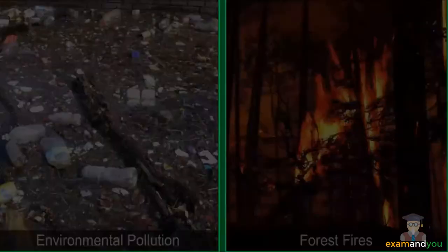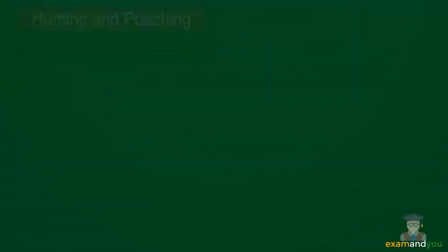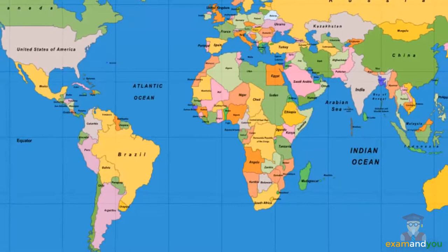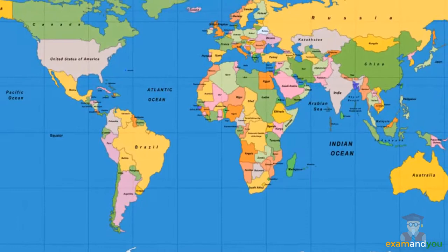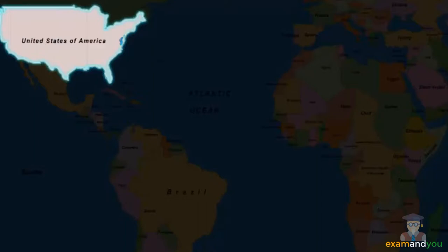Besides the causes discussed so far, factors like environmental pollution and forest fires also lead to depletion of both flora and fauna. The environmental factors that lead to a decline in biodiversity are caused by inequitable consumption of resources. For example, on an average, an American consumes 40 times more resources than a Somalian.